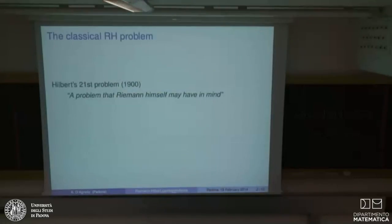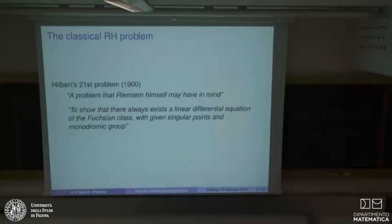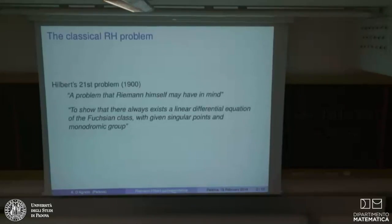The classical Riemann-Hilbert problem dates from 1900. It's Hilbert's 21st problem. Hilbert says that it is a problem that Riemann himself almost surely may have had in mind, and that is why it's called the Riemann-Hilbert problem. The statement from Wikipedia is: to show that there always exists a linear differential equation of the Fuchsian class with given singular points and monodromy group.